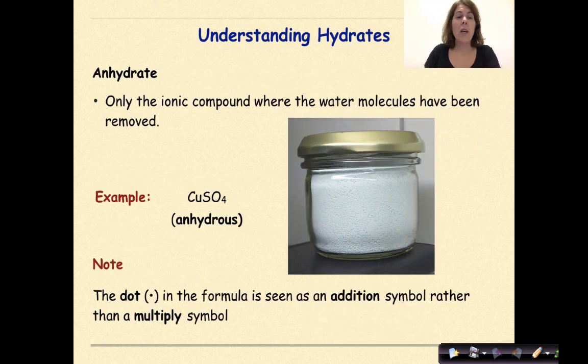An anhydrate is only the ionic compound where the water molecules have been removed. So copper sulfate by itself with the water molecules removed would be known as the anhydrate, also known as an anhydrous substance.